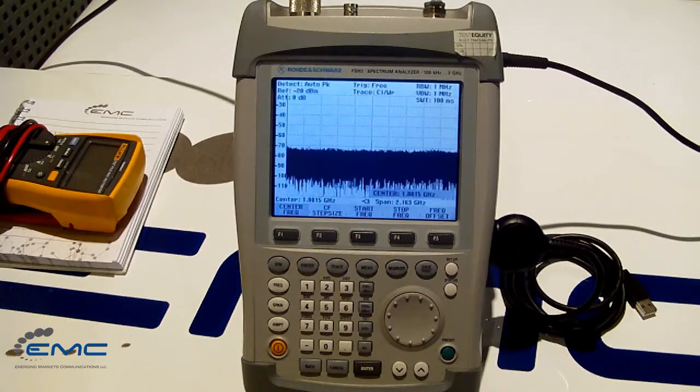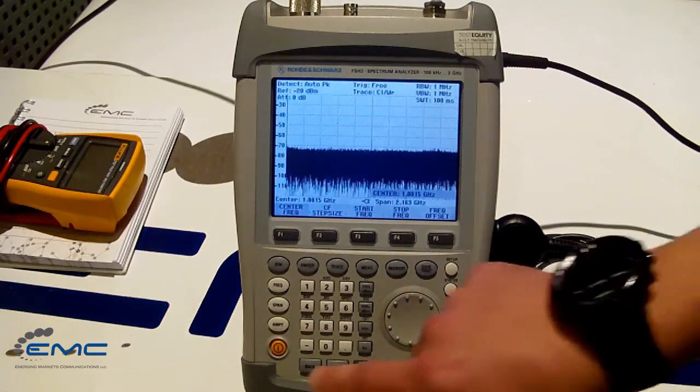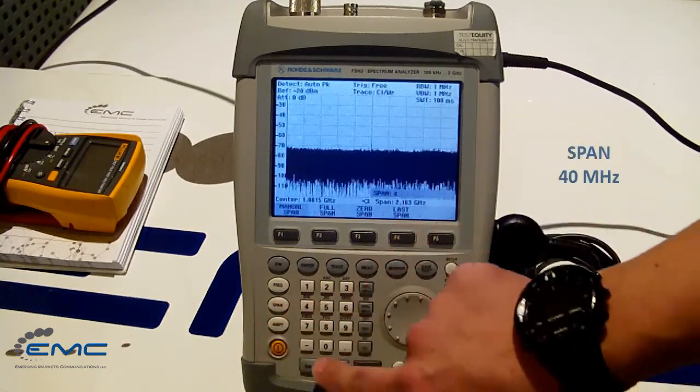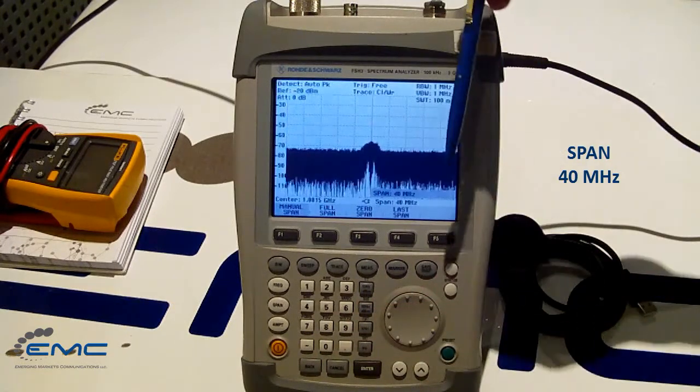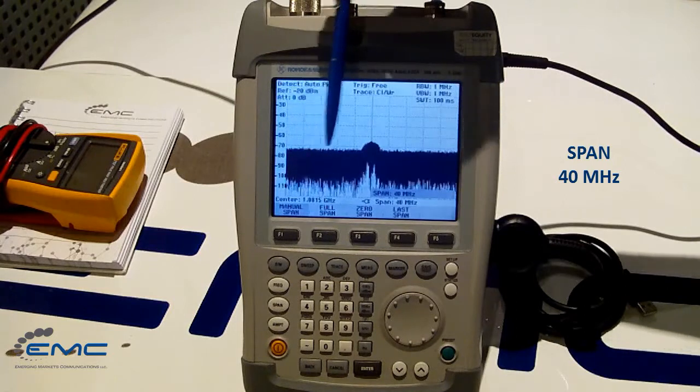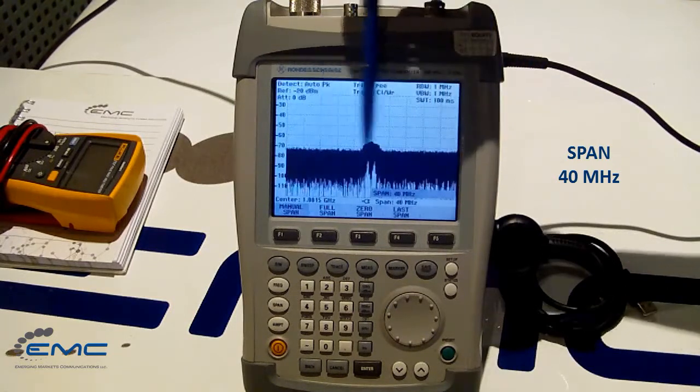Now, let's change span, for example, to 40 MHz. Now our display shows us only 40 MHz range of the trace we have here.